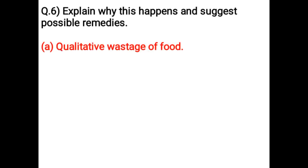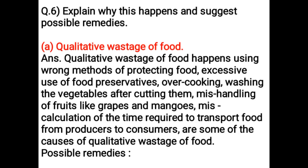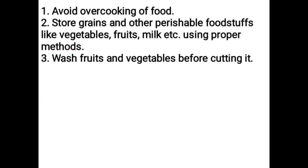Explain why this happens and suggest possible remedies — qualitative wastage of food. Qualitative wastage of food happens due to using wrong methods of protecting food, excessive use of food preservatives, overcooking, washing vegetables after cutting them, mishandling of fruits like grapes and mangoes, and miscalculation of transport time from producers to consumers. Possible remedies: avoid overcooking and store grains and perishable foodstuffs using proper methods. Wash fruits and vegetables before cutting.